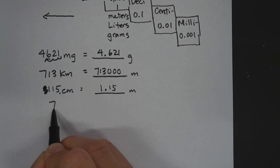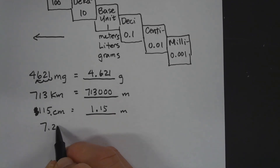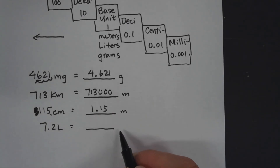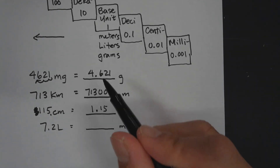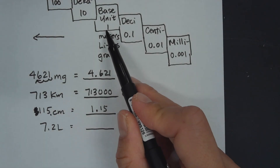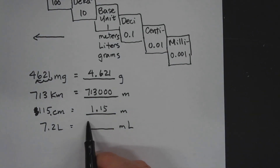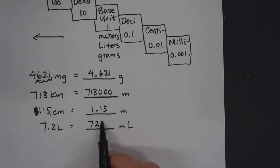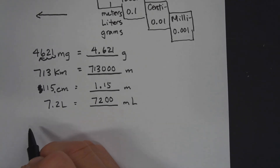Next we'll look at volume conversion. We have 7.2 liters and we're going to convert that to milliliters. We're going from a larger unit to a smaller unit, moving to the right three places. Moving the decimal three places to the right — adding zeros — gives us 7,200 milliliters.